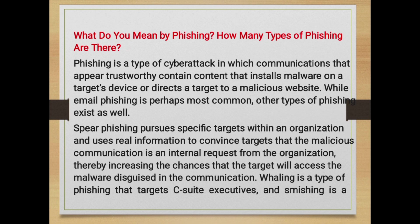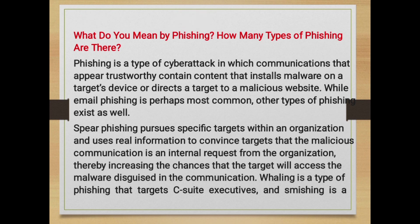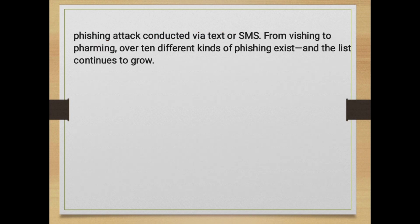What do you mean by phishing and how many types of phishing are there? Phishing is a type of cyber attack in which communication that appears trustworthy installs malware on a target's device or directs a target to a malicious website. While email phishing is perhaps most common, other types exist as well. Spear phishing pursues specific targets within an organization, using real information to convince targets that a malicious communication is an internal request. Whaling targets C-suite executives. Smishing is a phishing attack conducted via text or SMS. From phishing to pharming, over 10 different kinds of phishing exist and the list continues to grow.